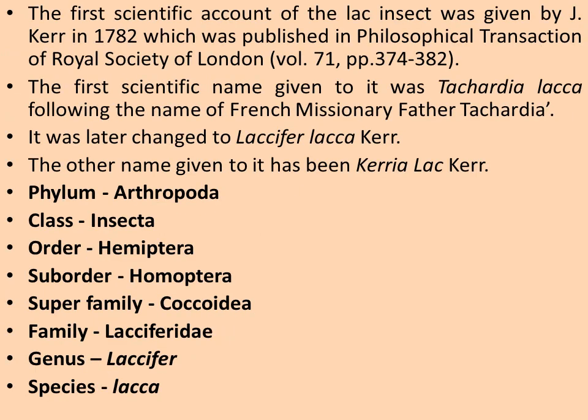The first scientific account of the lac insect was given by J. Kerr in 1782, which was published in the Philosophical Transactions of the Royal Society of London, Volume 71, pages 374 to 382. The first scientific name given to it was Tachardia lacca, following the name of French missionary Father Tachard.